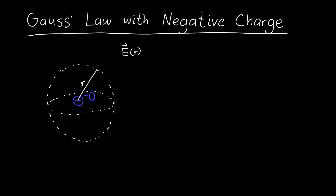I can use Gauss's law to do this because the problem has symmetry — in particular it has spherical symmetry. So every distance R away from the point charge will have the same magnitude of the electric field. Gauss's law says that the enclosed charge divided by epsilon naught is equal to the electric flux. All we need to do is find the enclosed charge and the electric flux, set them equal to each other, and we can find the electric field.